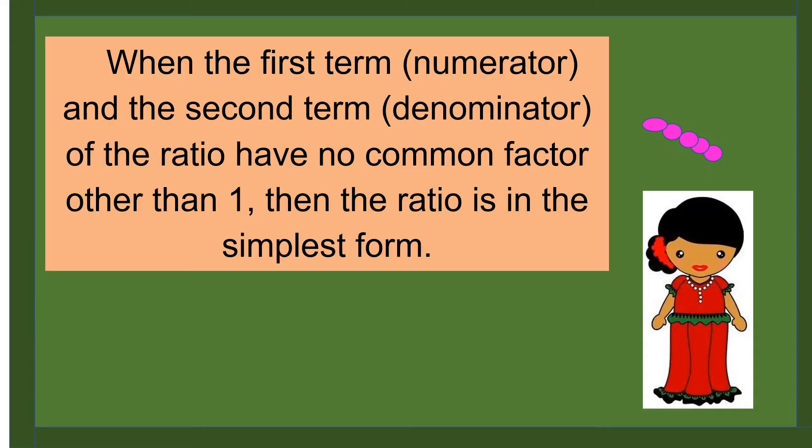When the first term, the numerator, and the second term, the denominator, of the ratio have no common factor other than one, then the ratio is in the simplest form.